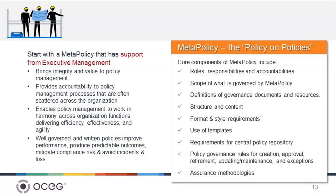Having a policy on policies is critical to document and define what is a policy, what can be labeled a policy, how it is managed and approved in the organization to become an official policy, and what the central repository is. That's what the policy on policies — or meta policy — is. The meta policy itself defines roles and responsibilities, accountabilities, how often the policy steering committee meets, where it reports, what the role of keeping policies current is, how we define a policy versus a procedure versus a standard versus a guideline, what the structure and content is, how policies are approved, and the rules for creation, approval, retirement, updating, maintenance, and managing exceptions.